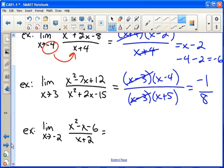So now we have the third example. Same process. You try to plug in negative two. Always try. And we get something that doesn't work because we get zero in the denominator. So then we factor.